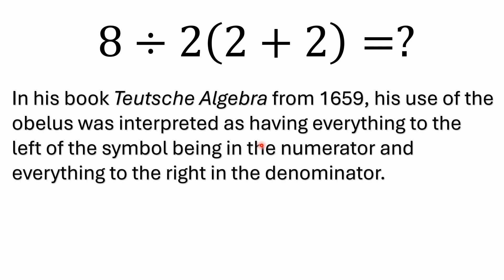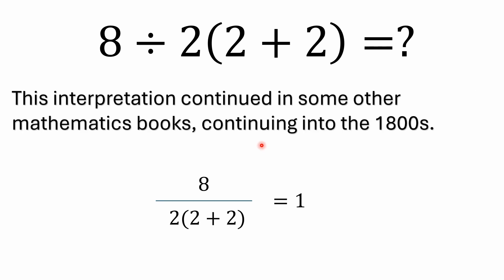Now, again, this is a really, really old interpretation of the obelus. Now, that interpretation continued on in some other mathematics books. I don't recall the names. I saw one once. It was from the 1800s, where it still used that interpretation. And again, it kind of would look like this. The idea was they looked at the obelus as putting everything, the 2 and the 2 plus 2 in the denominator, which would give you 1.